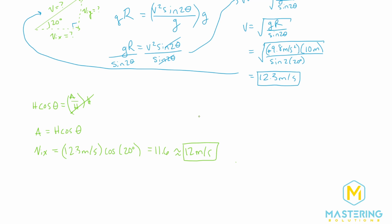And like I said, if you want me to go through the longer route to get to these, let me know. I'm happy to make a follow-up video, so comment below if you want that. Otherwise, here are your answers. 12.3 meters per second for the takeoff speed, and 11.6, or rounded to 12 meters per second for the x component of the takeoff speed.